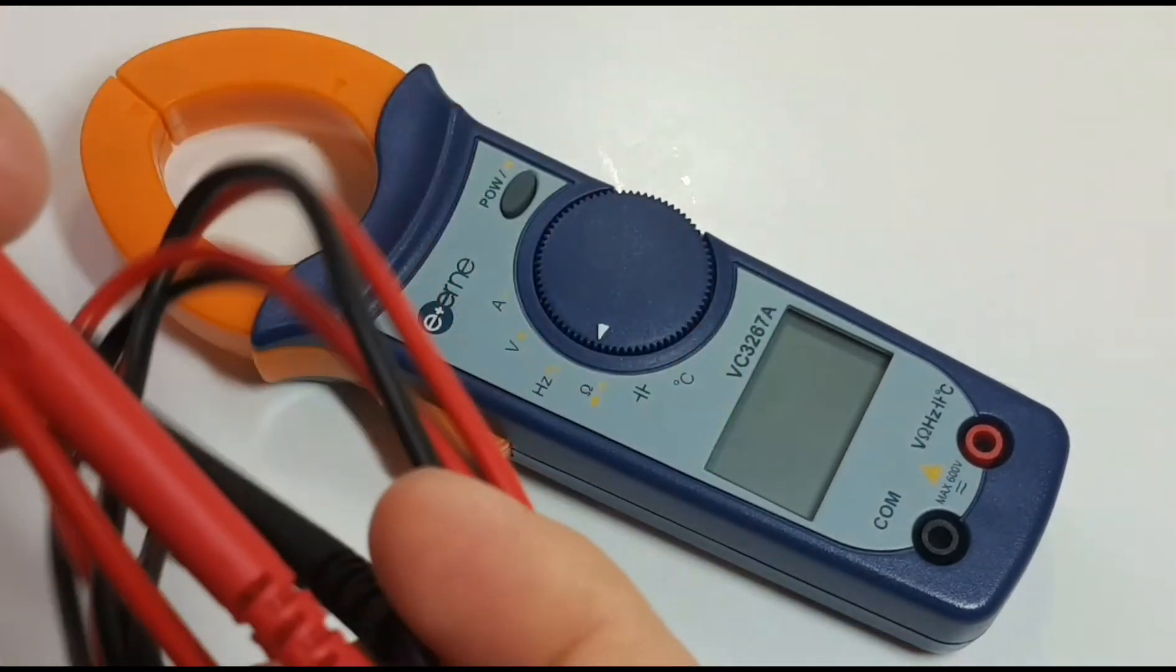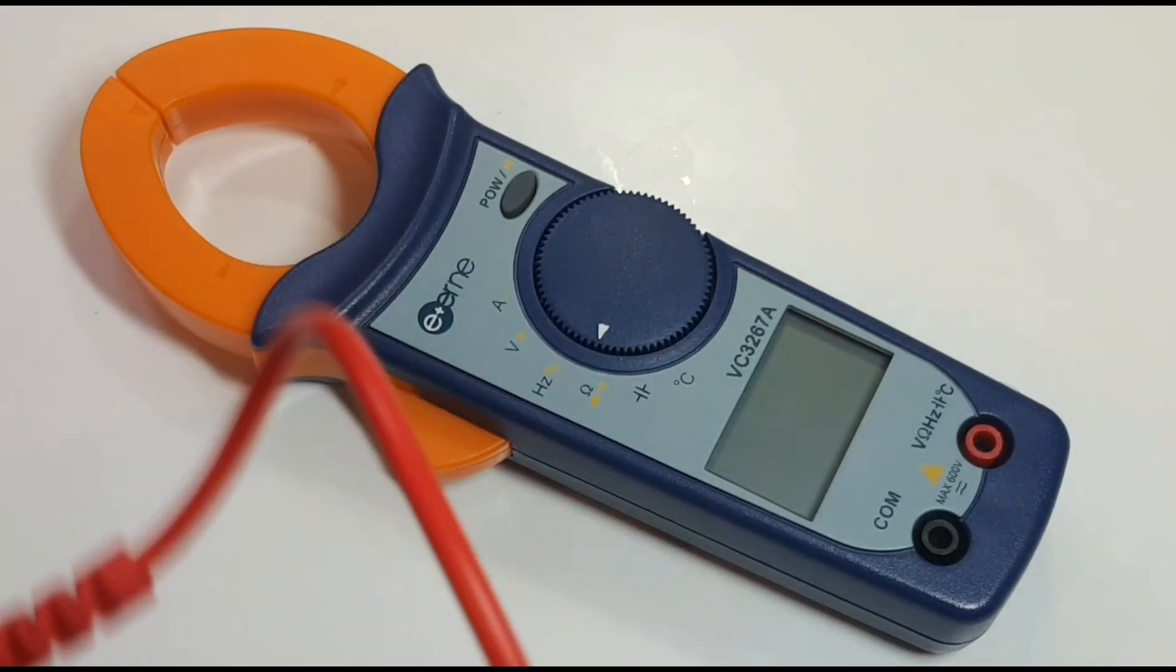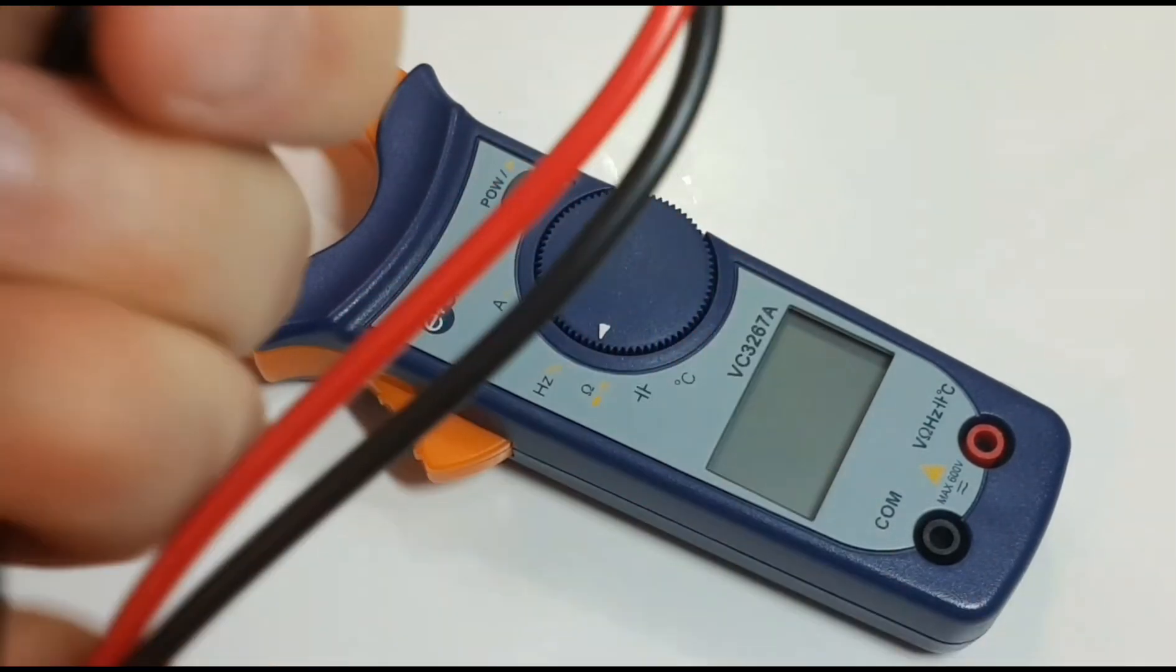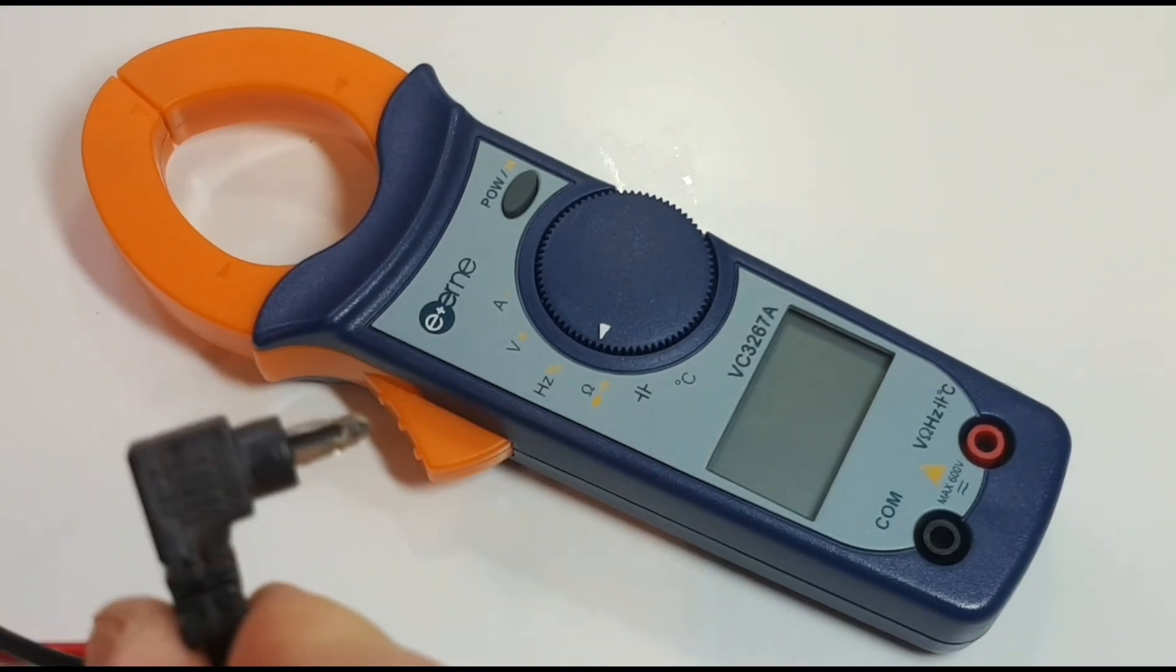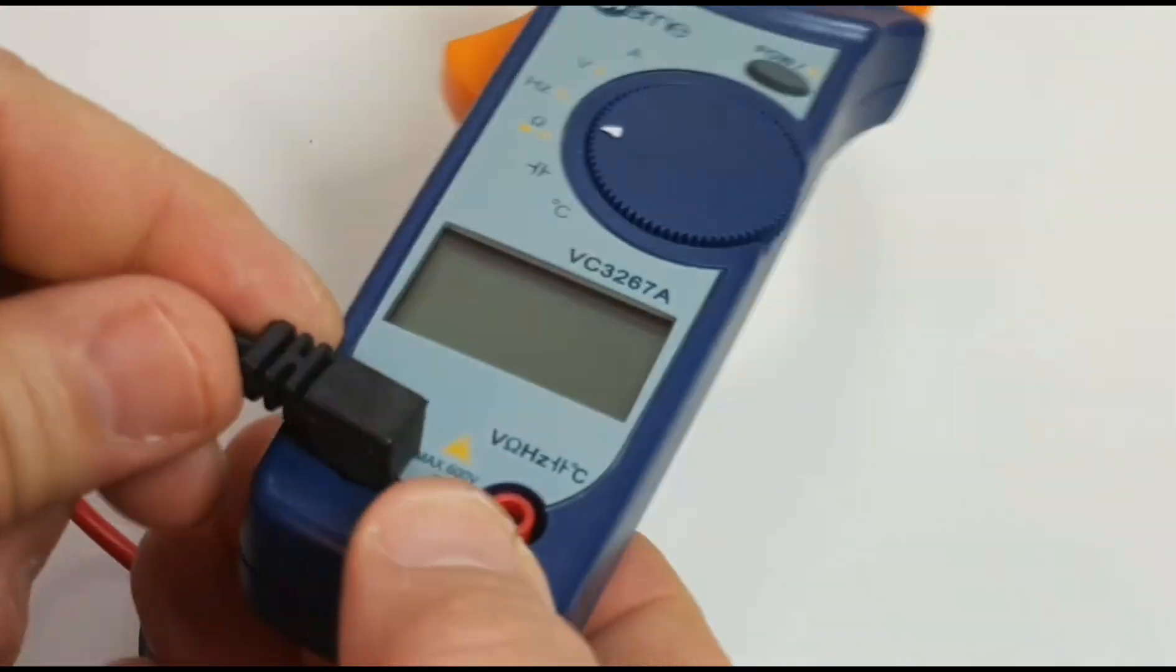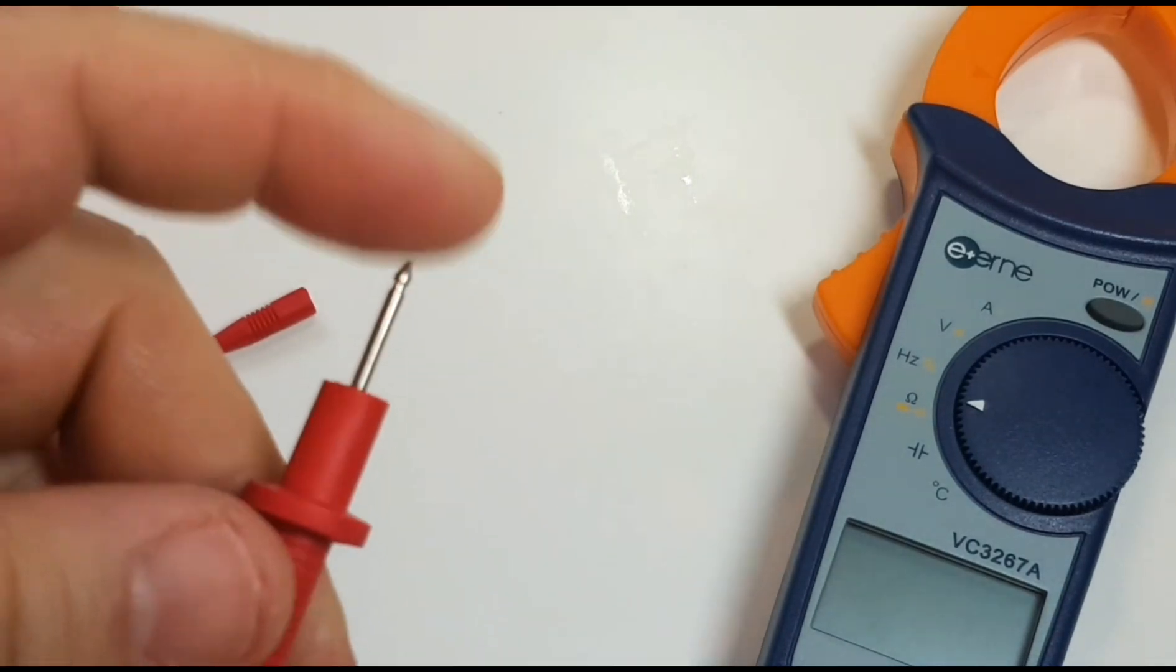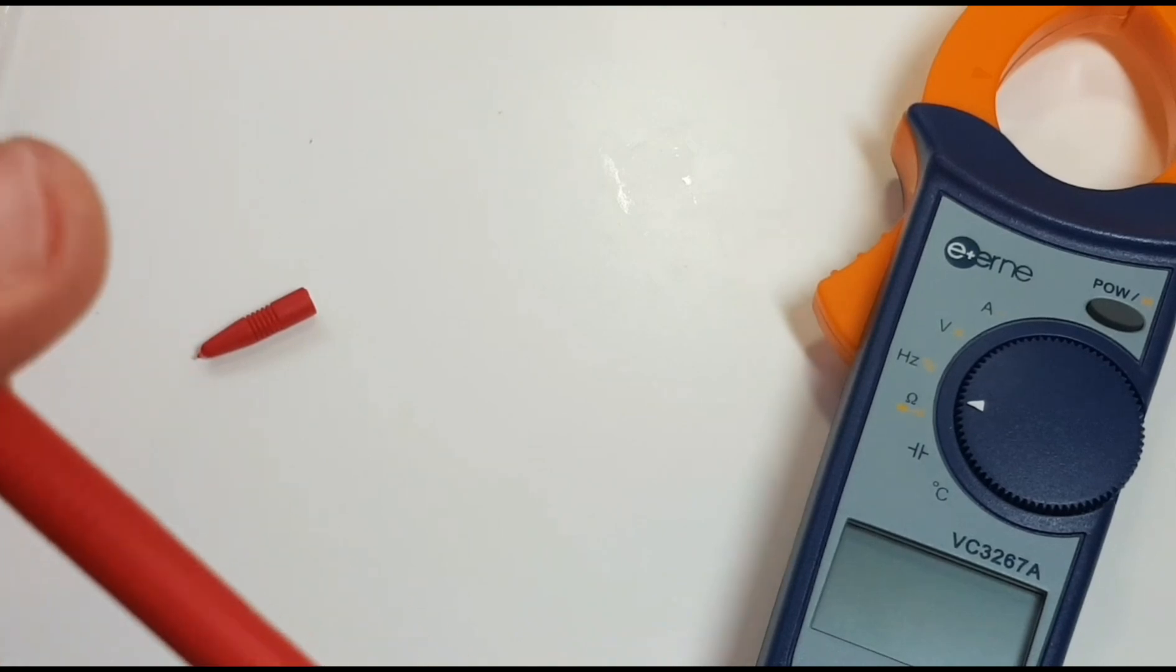The default probes it ships with are marked as 1000 volts. They are obviously not silicon, but that being said they're okay in terms of the overall feel. Now the shrouding is very minute on these, so I would have liked to seen longer shrouding.